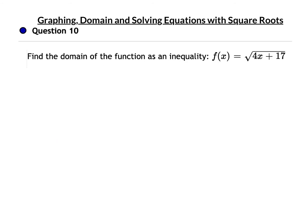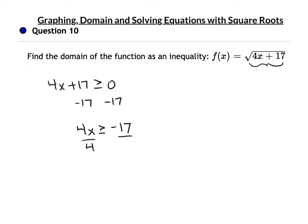For question 10, again we're looking for the domain. The square root can't be negative, which means 4x plus 17 has got to be greater than or equal to 0. Take 17 off each side: 4x is greater than or equal to negative 17. Divide by 4 — do not flip the sign; you only flip the sign if you divide or multiply by a negative number. So x is greater than or equal to negative 17/4.